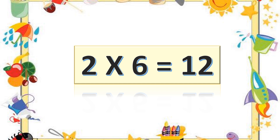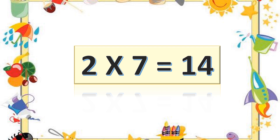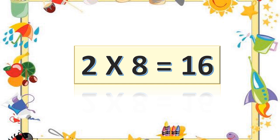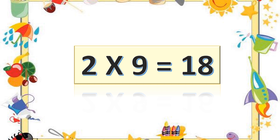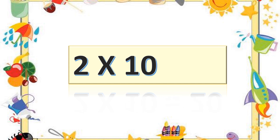Two sixes are twelve. Two sixes are twelve. Two sevens are fourteen. Two sevens are fourteen. Two eights are sixteen. Two eights are sixteen. Two nines are eighteen. Two nines are eighteen. Two tens are twenty. Two tens are twenty.